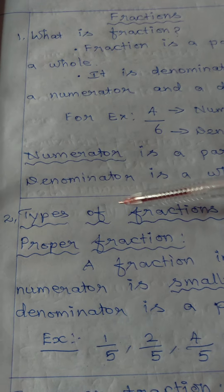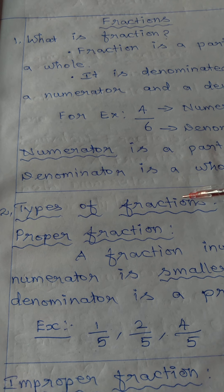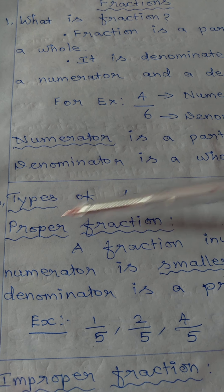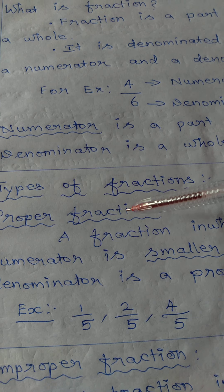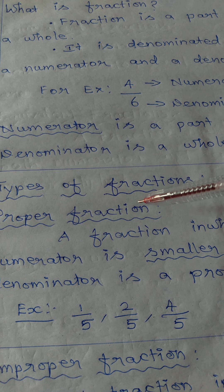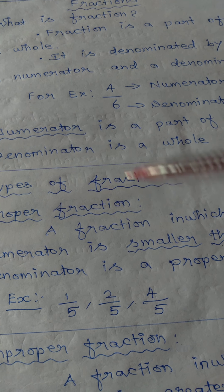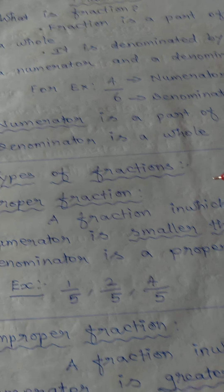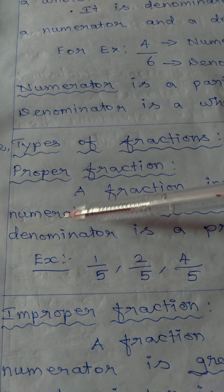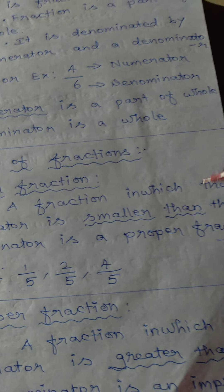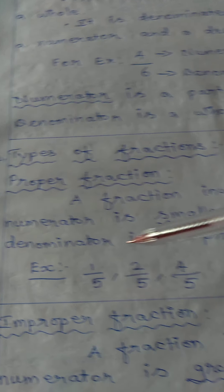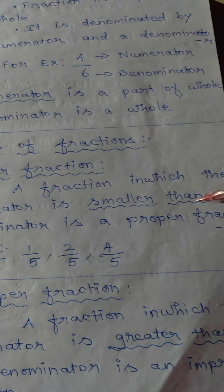Next, types of fractions. The first type is the proper fraction. A proper fraction is a fraction in which the numerator is smaller than the denominator.